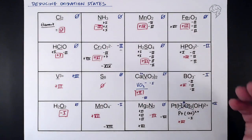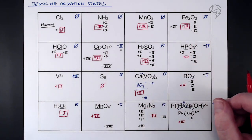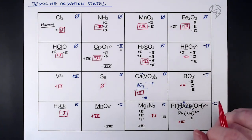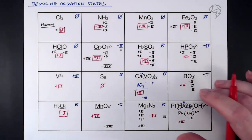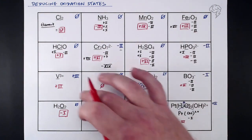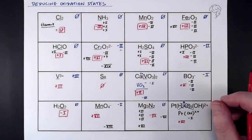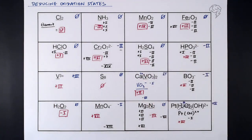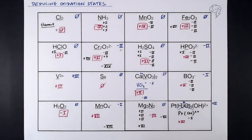I've worked through these quickly, but hopefully these 16 examples cover the different types you may come across — with brackets, charges, ions, and water ligands. It does take practice, so make sure you work through them. Using these examples you should be able to find the oxidation states of unknown elements in compounds and ions, which is what we'll be using over the next few tutorials.